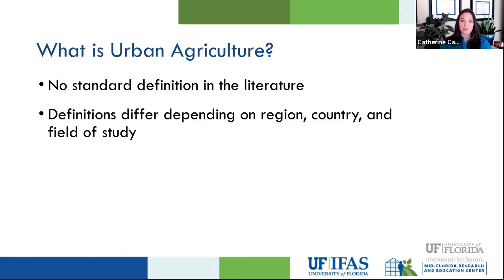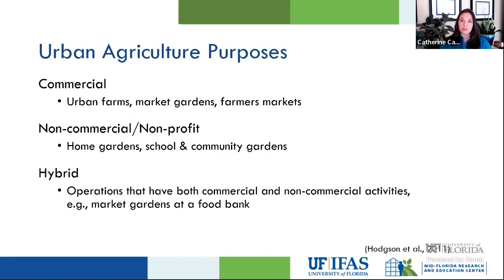The answer to the question of what urban agriculture is is not straightforward — there is no standard definition in the literature. The definitions people use depend on the region, the country, the field of study, or the purpose for which they're engaging in urban agriculture. It's helpful to think about what purpose it's being used for. Urban agriculture can be commercial agricultural production — things like urban farms, market gardens, and farmers markets — or non-commercial or nonprofit activities like home gardens or school or community gardens. There are also hybrid operations with both a commercial and non-commercial element, such as a nonprofit with a market garden that sells food to support its nonprofit activities.